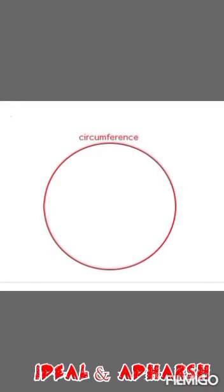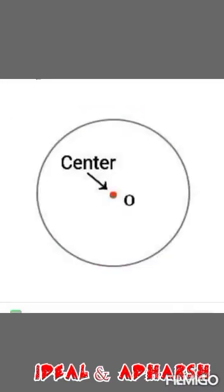Next, center. Center is the point that is equidistant from every point on the circumference of the circle. It is denoted by O.